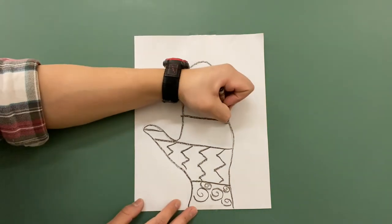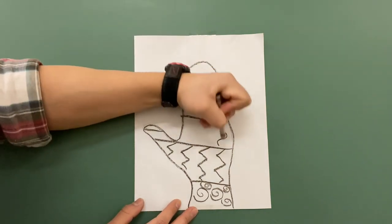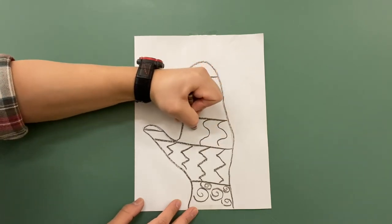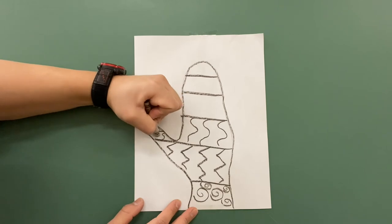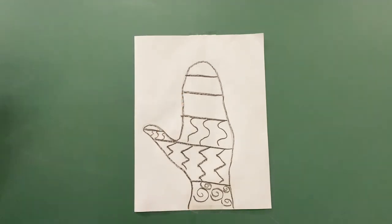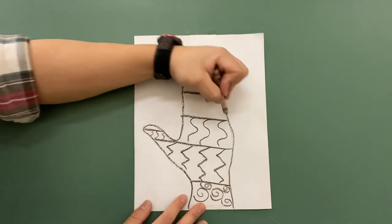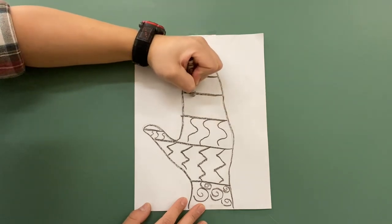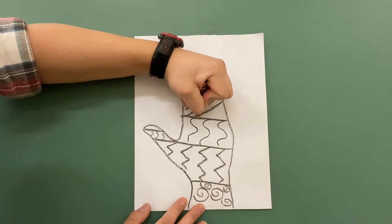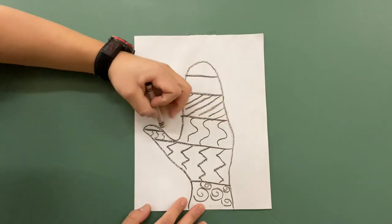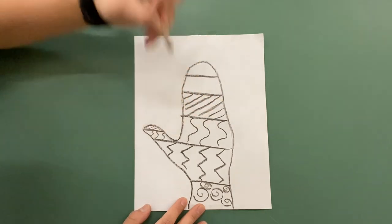Curved lines here. Sort of look like the letter S, or like a snake. We can make curved lines here too. And then diagonal lines. Go from one side to another. We can make diagonal lines on this tippy top here of the thumb.